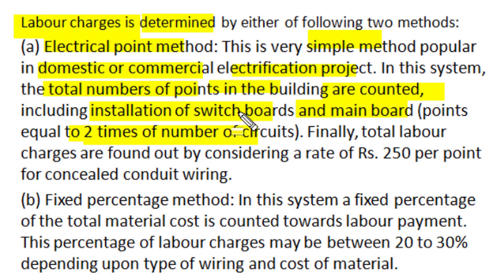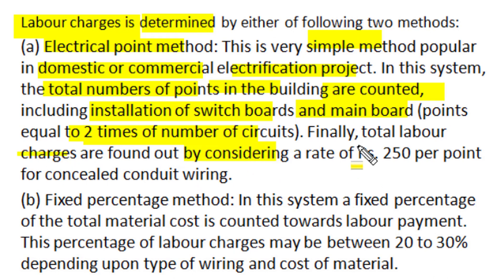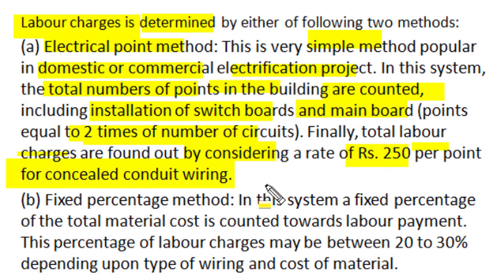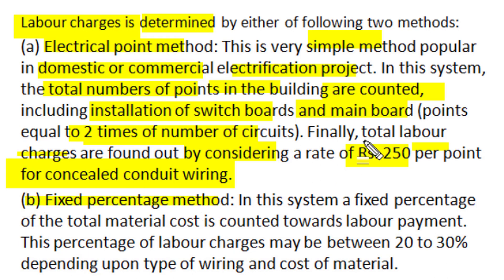So the whole electrical installation becomes simply the total number of points. Finally, the total labor charges are found by considering a flat rate of say 200 to 300 rupees per point — say 250 rupees per point for concealed conduit wiring — and we can find out the total labor cost involved in any building electrification. A second fixed percentage method can also be used.